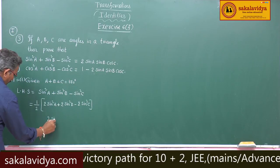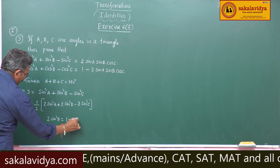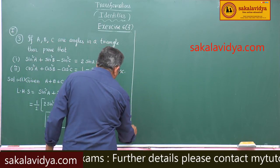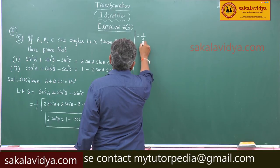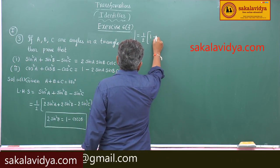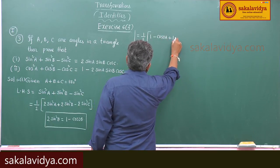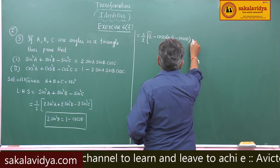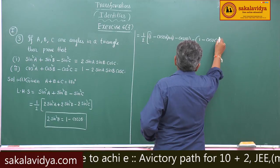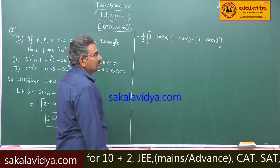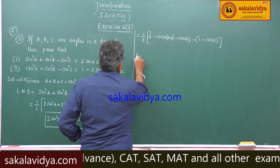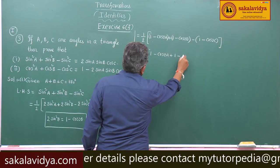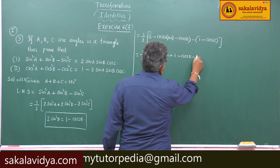We know that 2 sin²θ is equal to 1 minus cos 2θ. So this is equal to 1/2 times (1 minus cos 2a) plus (1 minus cos 2b) minus (1 minus cos 2c). Expanding: 1 by 2 into (1 minus cos 2a plus 1 minus cos 2b minus 1 plus cos 2c).